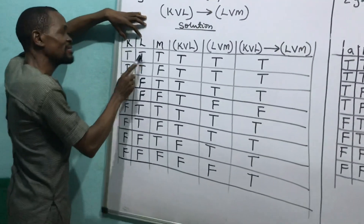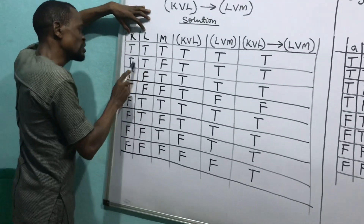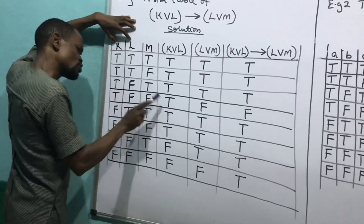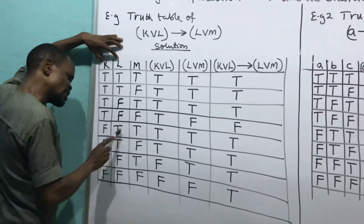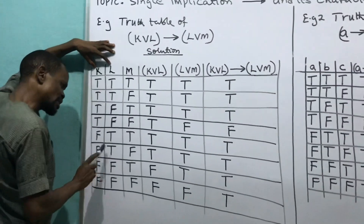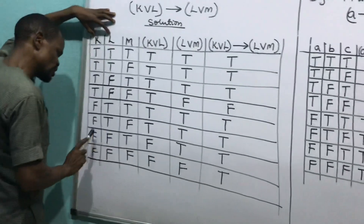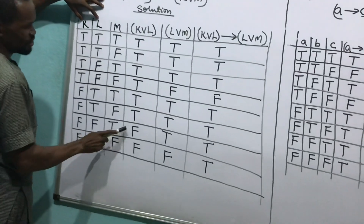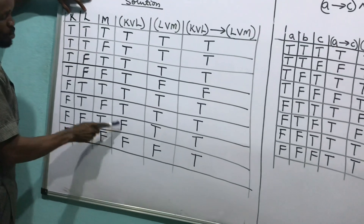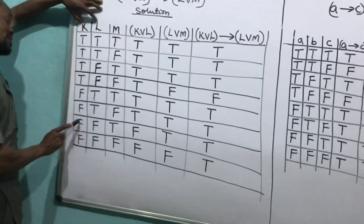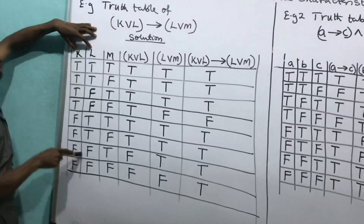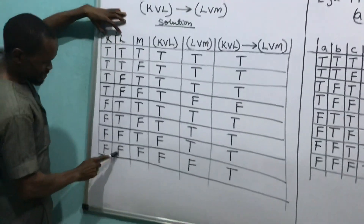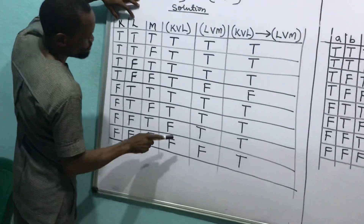Look at it: this and this — true. This and this — true. This and this — true. This and this — true. This and this — true. This and this — true. This and this — it will not say false. That's only when false will come out. False, false — it will not say false. Apart from that, false — it will not say false.